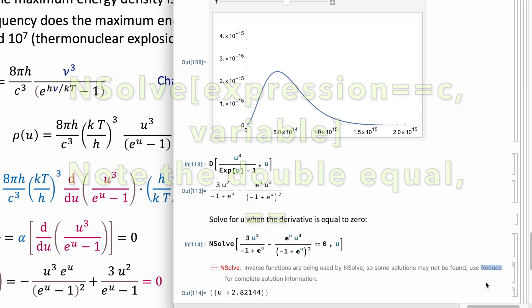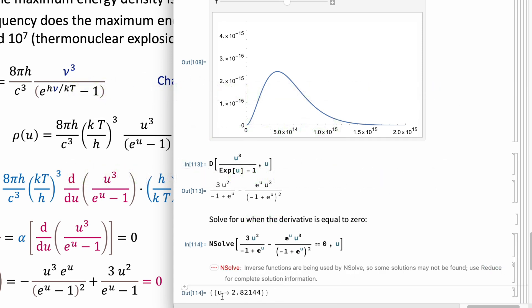It suggests you to use this other reduce function for complete solutions. Okay, but it's giving me the solution that u is equal to this value. This is the value that when you plug it back in this expression, that's going to give you equal to zero.